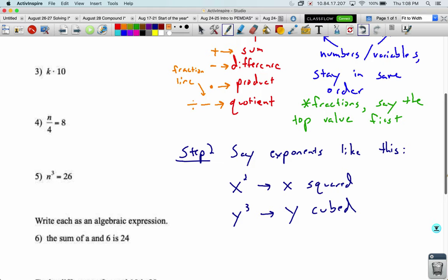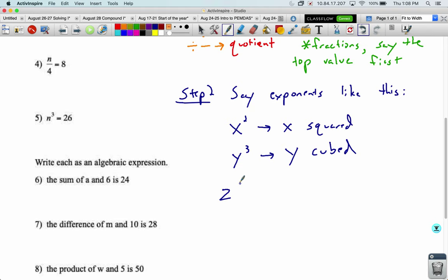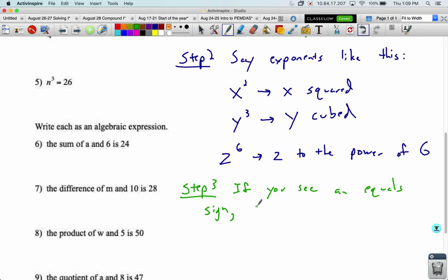And if you've got something to an even higher power, like z to the power of six, we say z to the power of six. Alright. The last thing we can run into is an equal sign. So step three, if you see an equals sign, say is equal to, then whatever is on the other side.